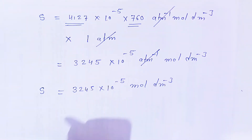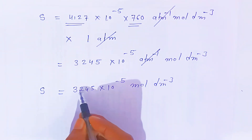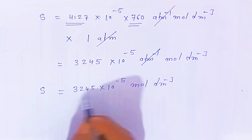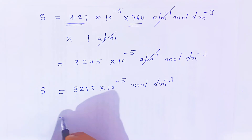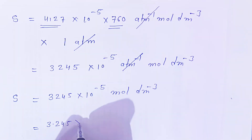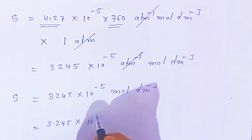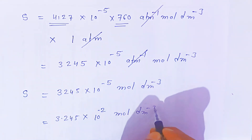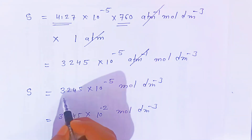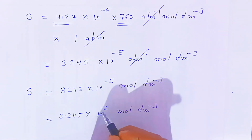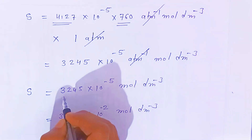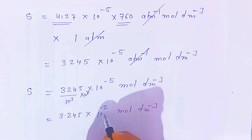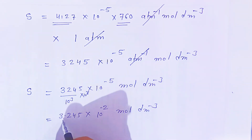Now I want to convert this into standard form with one digit before the decimal. So 3245 × 10⁻⁵ — you divide by 1000 and multiply by 1000, which means dividing by 10³ gives 10⁻² and multiplying adjusts the coefficient. This converts to 3.245 × 10⁻² mole per dm³. This is the answer.